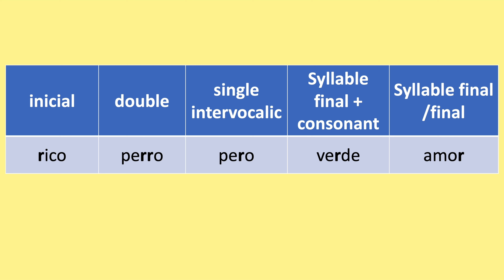The five types are: the initial, which is at the beginning of a word; the double R; the single intervocalic, which means between two vowels; the syllable-final plus a consonant, which comes at the end of a syllable and before a consonant; and the syllable-final final. Even though the final is a syllable final, when it's at the end of a word, it is pronounced differently in some regions.